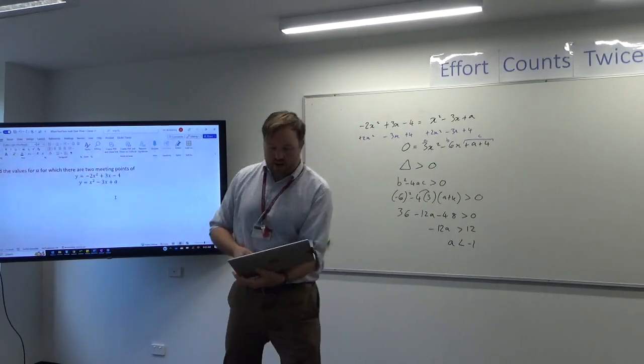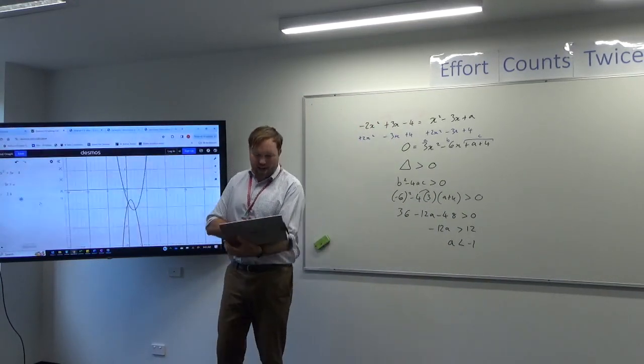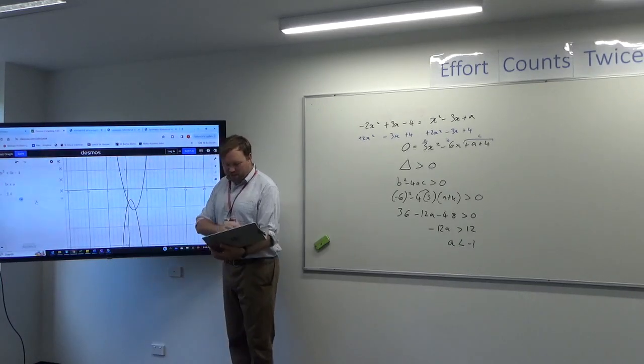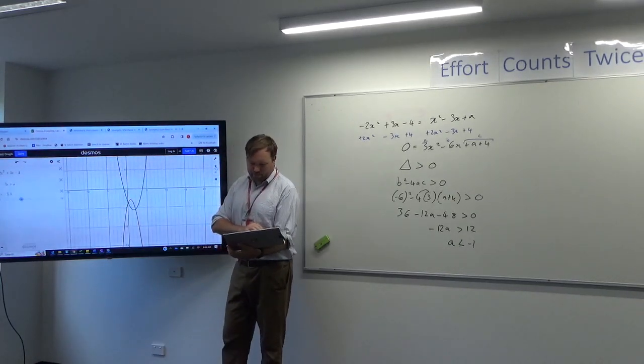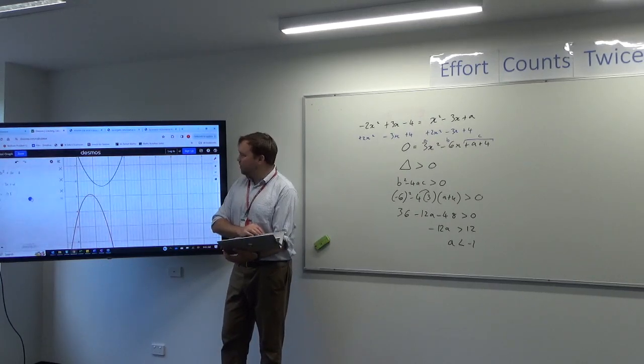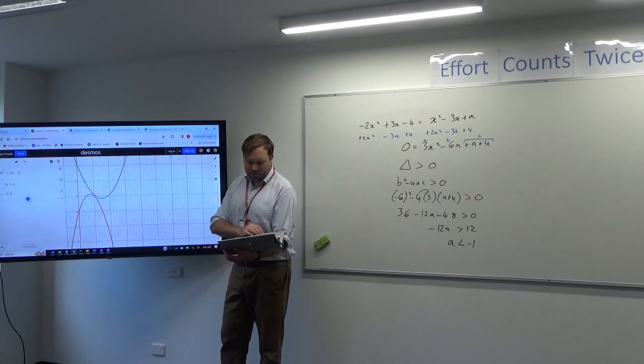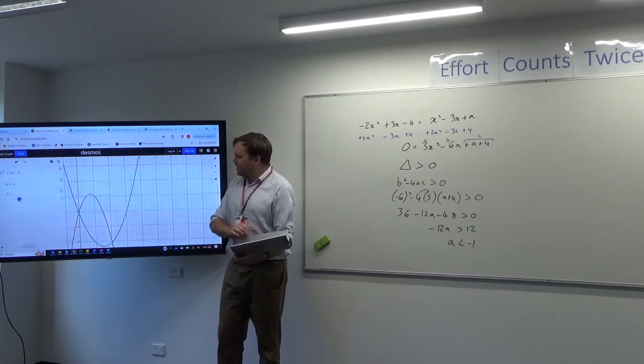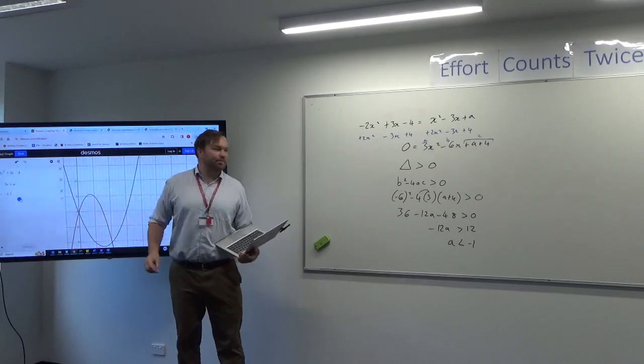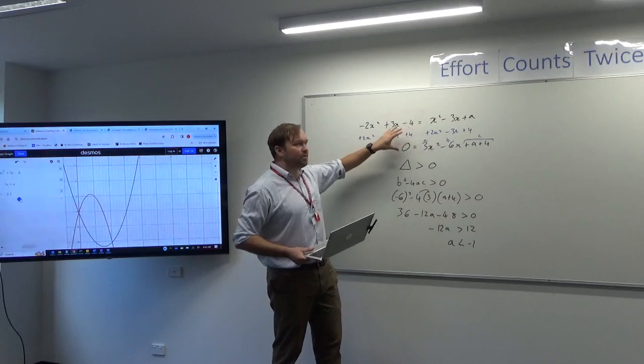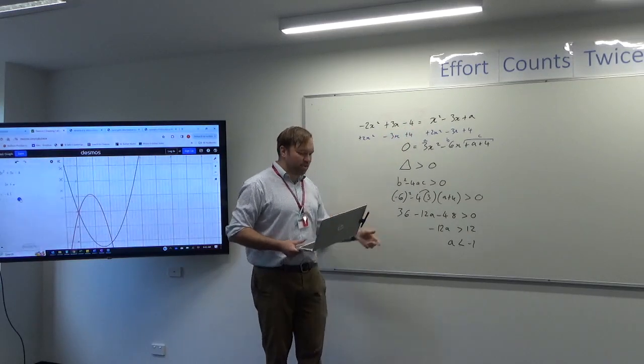And that's what we saw on the graph is that if I dragged A down below minus 1, there were two distinct intersection points. If A goes above minus 1, then there are no points. A at minus 1, there is one point. But for everything where A is under minus 1, there were two points. So it's neat. You can tell quite a lot about a graph's intersection points algebraically using the discriminant.